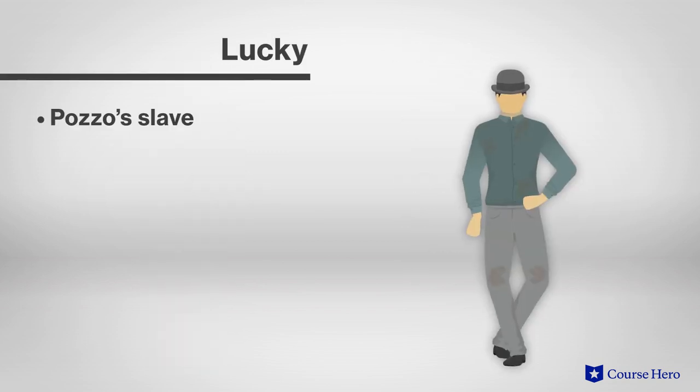Lucky, as Pozzo's slave, must constantly carry burdens that are not his own. His body is constrained, much like his free will, as he wears a rope around his neck that Pozzo holds onto like a leash as he whips him.